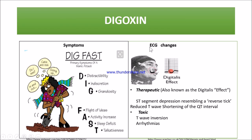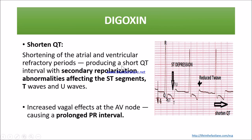ECG changes with digoxin include ST segment depression resembling a reverse tick effect, reduced T wave, and shortened QT interval. With digoxin toxicity, T wave inversion and arrhythmia will be present. Additionally, shortening of atrial and ventricular refractory periods produces a shortened QT interval. Secondary repolarization abnormality causes ST depression and T wave inversion. Increased vasovagal effect at the AV node causes a prolonged PR interval.